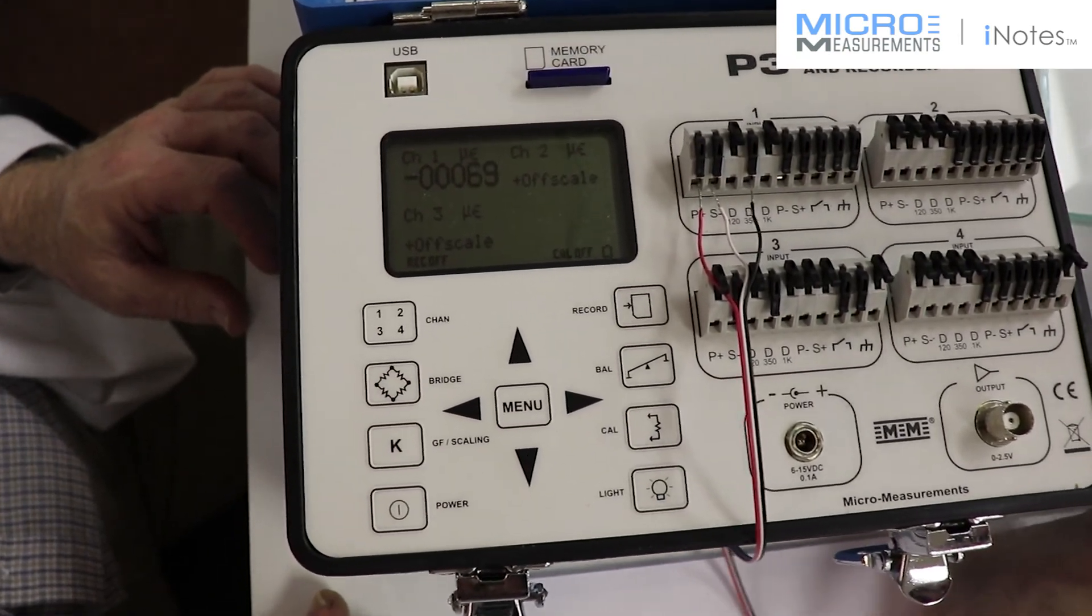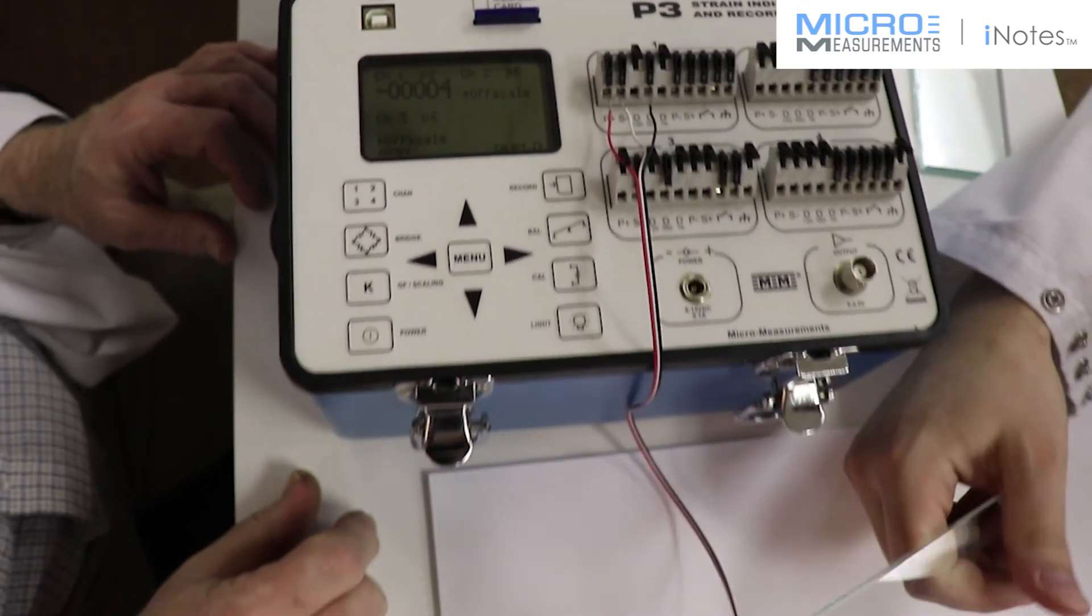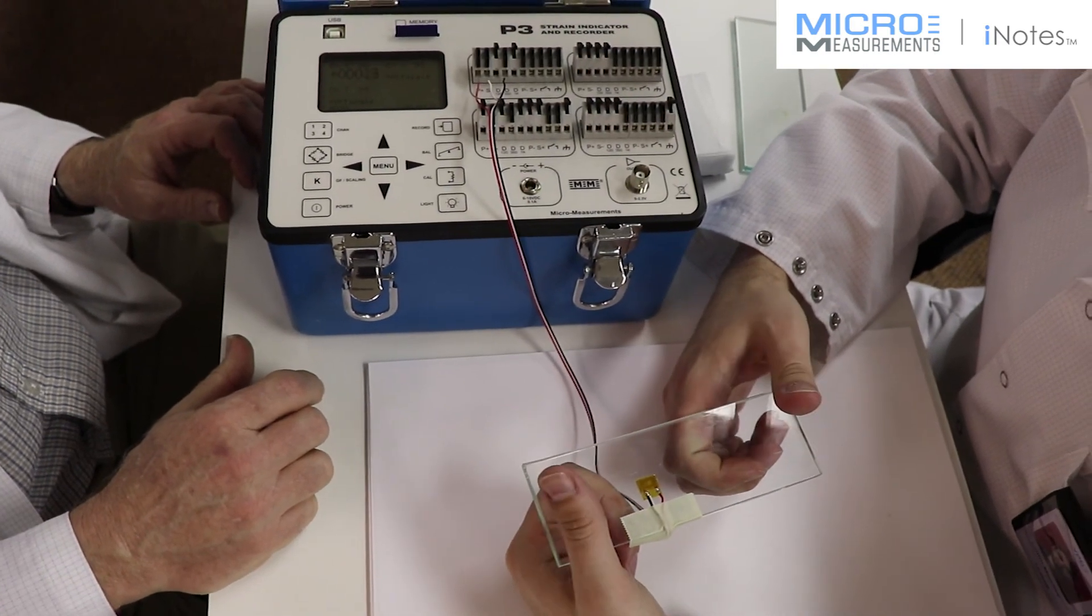Now, obviously, 130 microstrain is not terribly high, but for a piece of glass, that's pretty good. And looking at our zero return, it's within a couple of counts, and so it looks like the gauge is fairly well bonded.